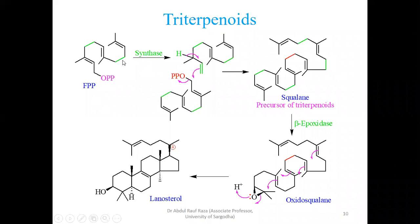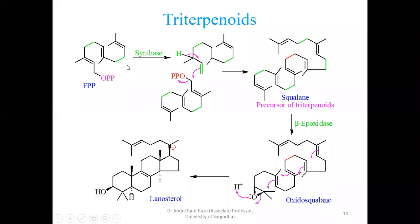But triterpenoids — and you shall see tetraterpenoids afterwards — are always formed by a tail-to-tail combination, not head-to-tail. In head-to-tail, one unit is the donor and the other is the acceptor. That is what is normal chemistry.